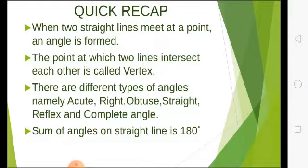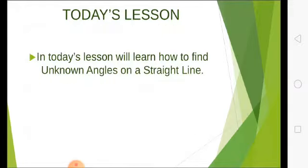And then we learned a very important point that sum of angles on a straight line is always 180 degrees. Now come to today's lesson. Our today's lesson is about how to find unknown angles on a straight line.